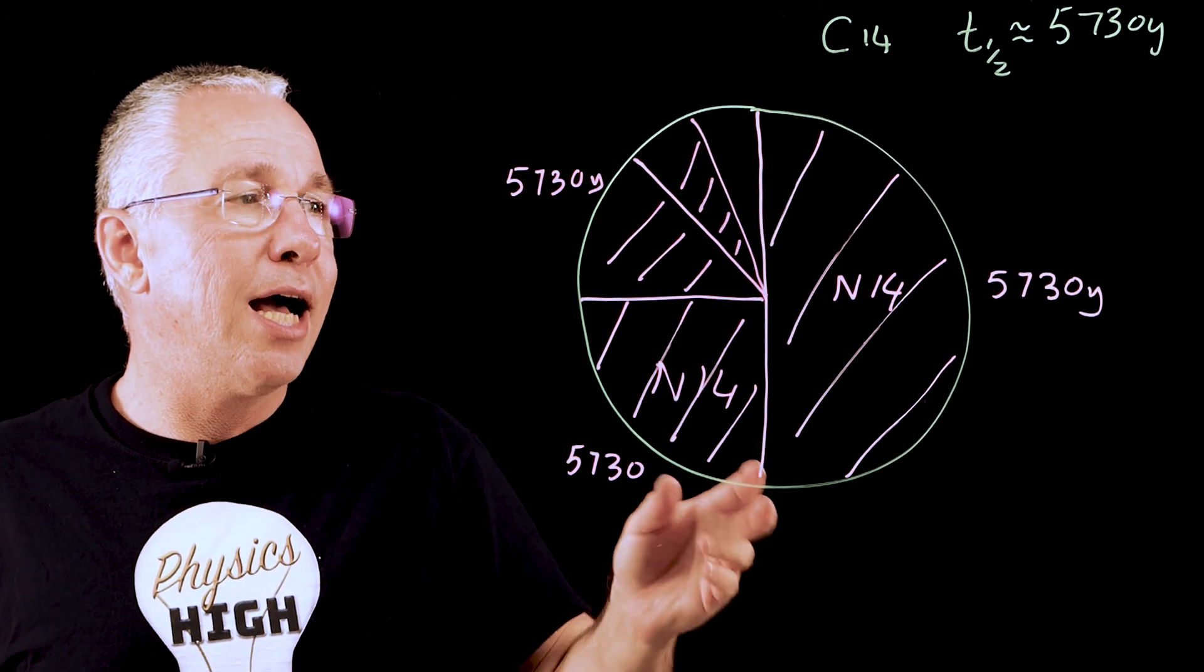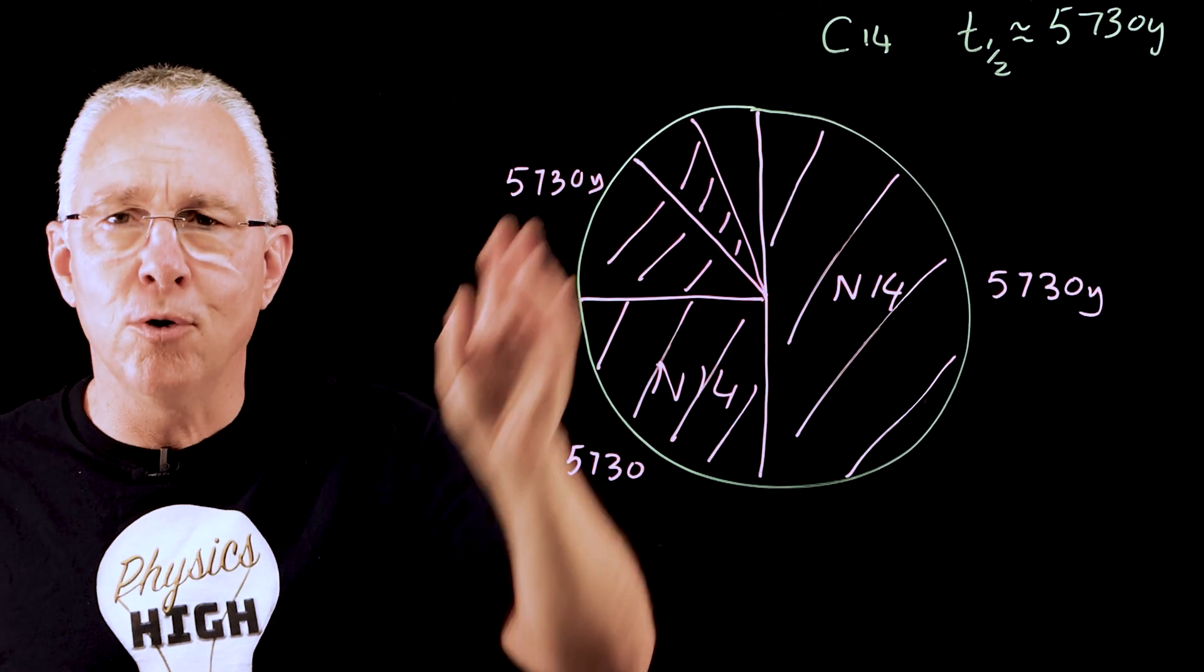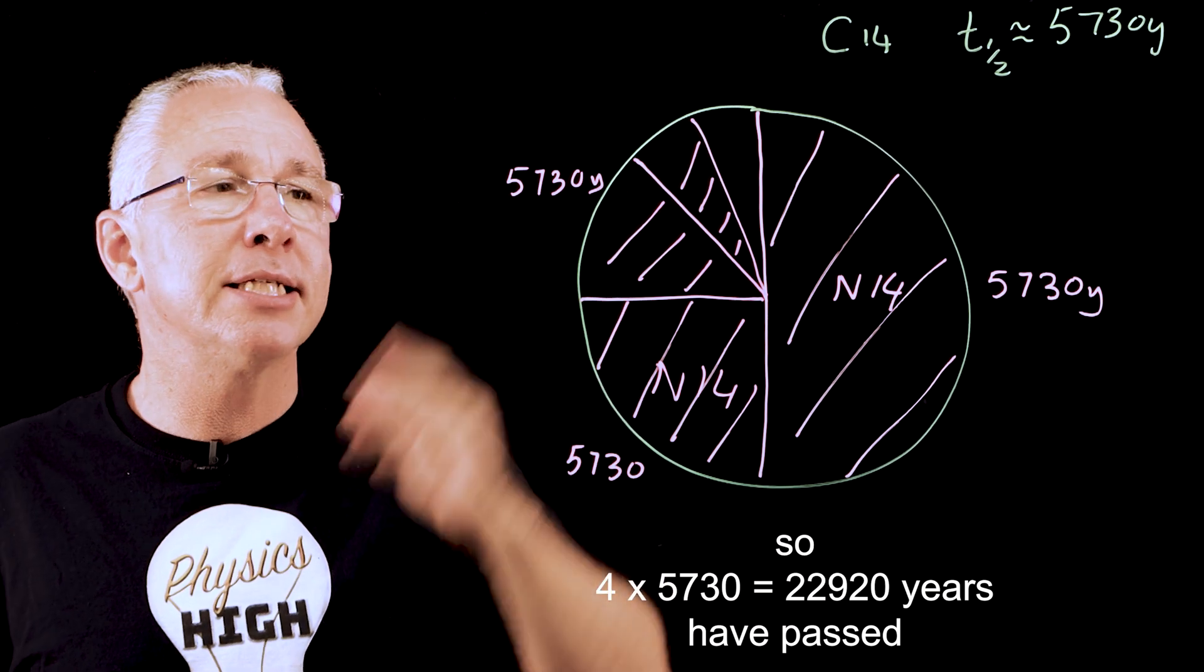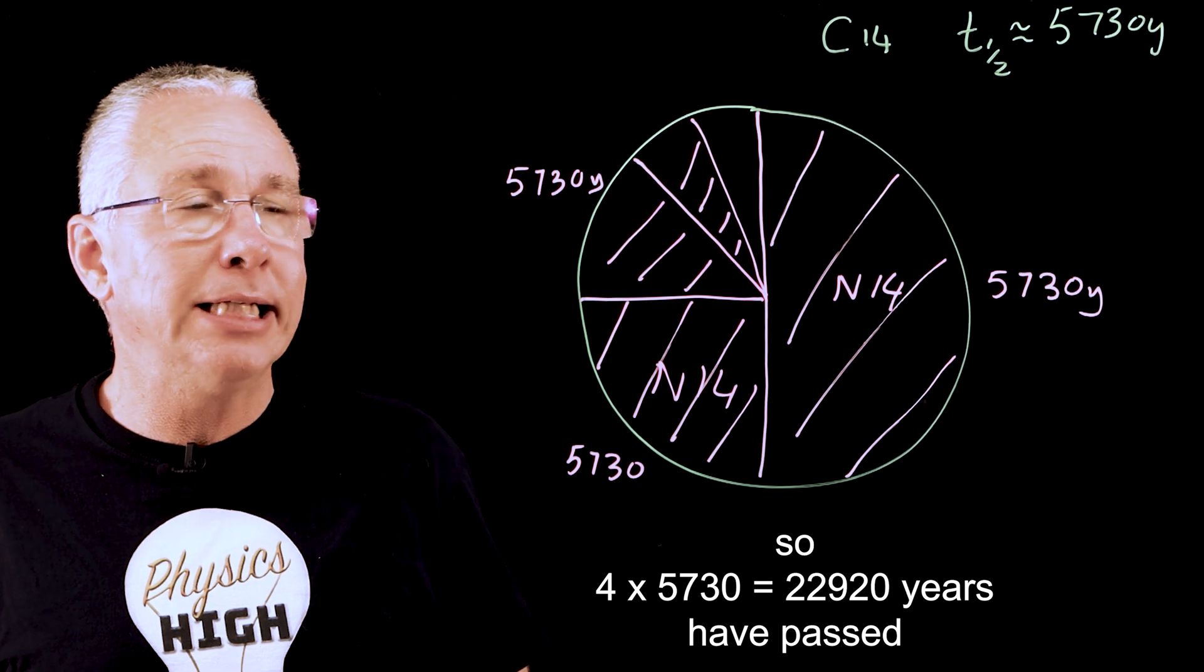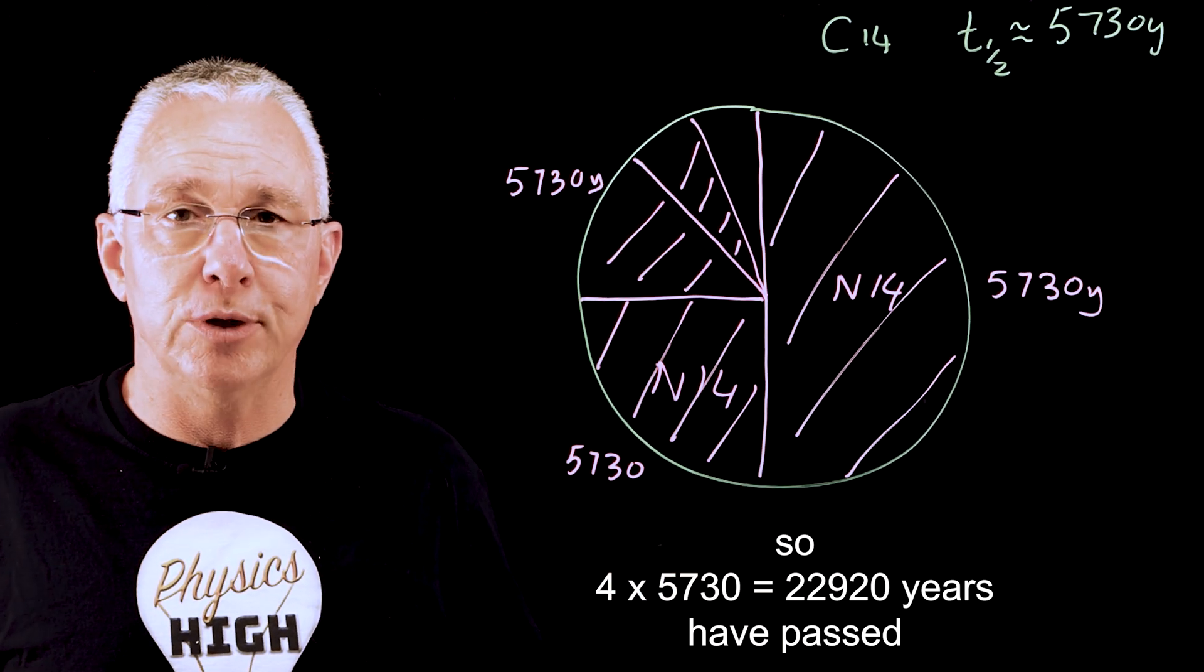in this case, what I have is 1, 2, 3, 4 half-lives. And by this stage, I have only one-eighth of my initial amount being carbon-14 and the remainder is nitrogen-14.